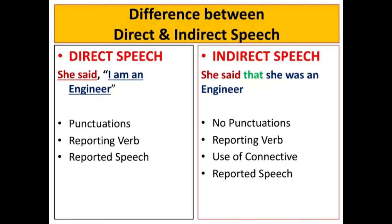Do subscribe to my channel for upcoming videos. So, here I start. What exactly is the basic difference between direct and indirect speech? In the first example, 'I am an engineer,' she said. Here, punctuations are present, a reporting verb is there, and reported speech is given. So, punctuations, reporting verb, and reported speech are the three important elements of direct speech.